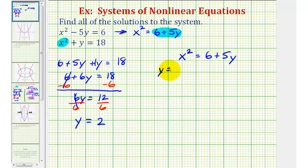If y equals two, that means x squared equals six plus five times two. Well, five times two is 10, so we have x squared equals 16.